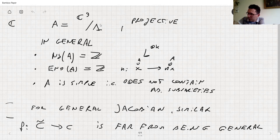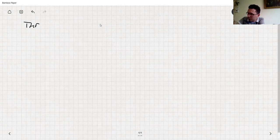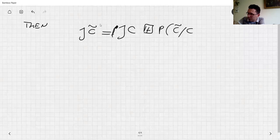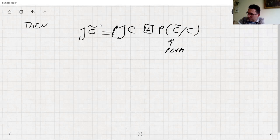The Jacobian J(C̃), as we said, is the Jacobian of JC — it contains some abelian sub-variety, and we call this the Prym. We're interested in what this Prym can be. For double coverings, the Prym has dimension g−1, and we will see the results of Nagata for A₅.